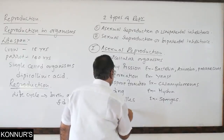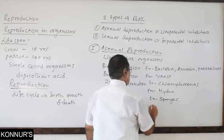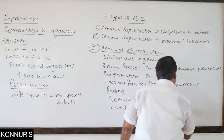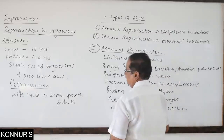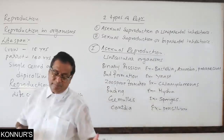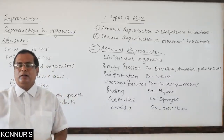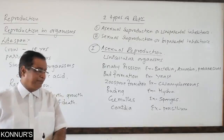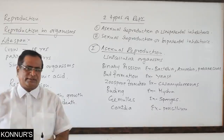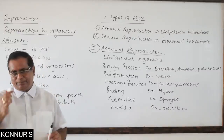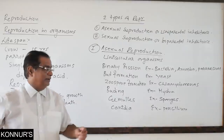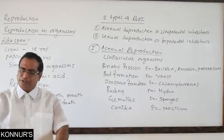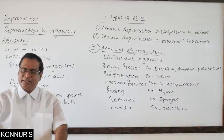Conidia formation takes place in the fungus Penicillium. Penicillium has branches like fingers, and at the end of those fingers there are spores named conidia. From those conidia, new young ones are produced. So conidia formation in Penicillium is an example of asexual reproduction.